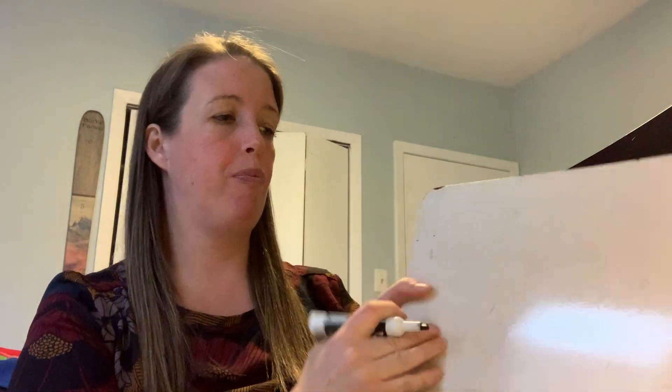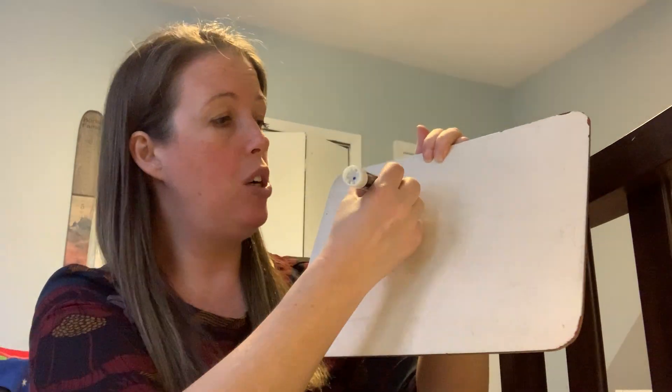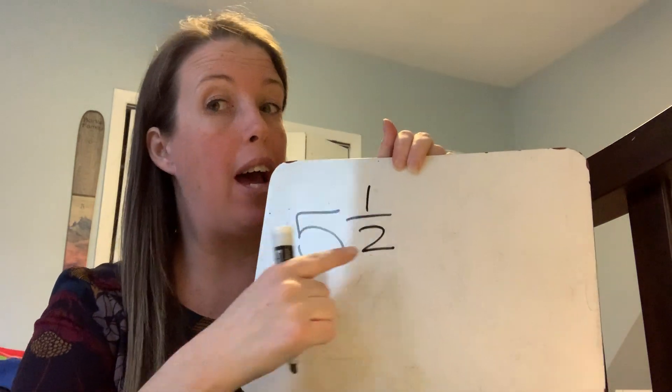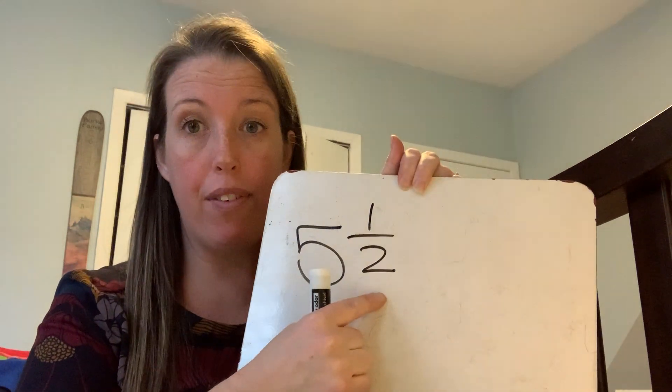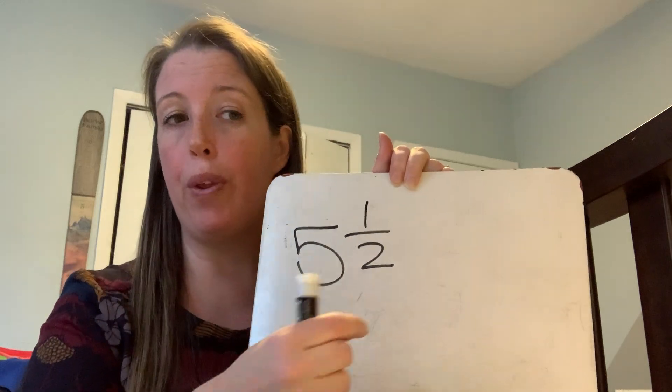So to start, what is a mixed number? A mixed number is when you have a whole number and a fraction. For example, five is a whole number, one half is a fraction, and five and a half is a mixed number. It's a mixture of a whole number with a fraction.